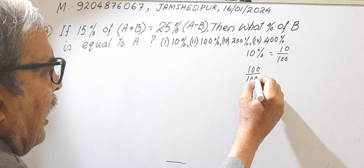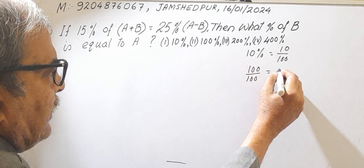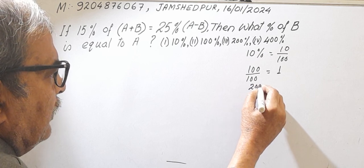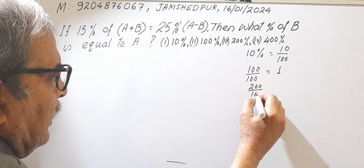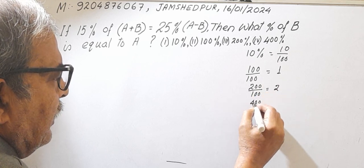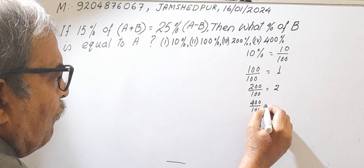The percentage sign directly indicates division by 100, so 100% equals 1. Similarly, 200% is 200 by 100 equal to 2, and 400% is 400 by 100 equal to 4.